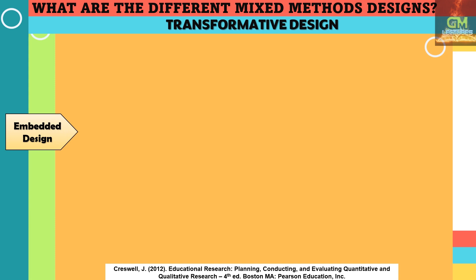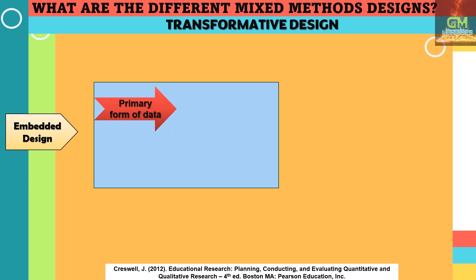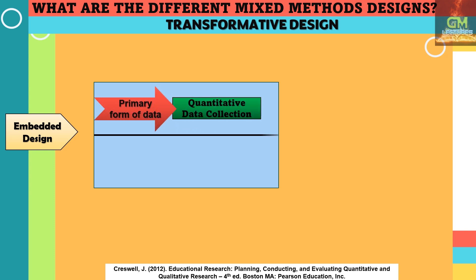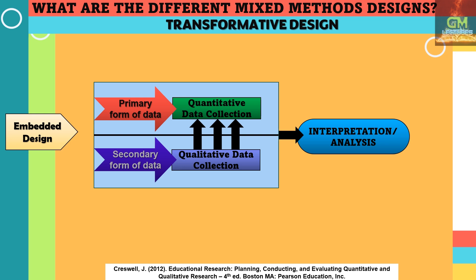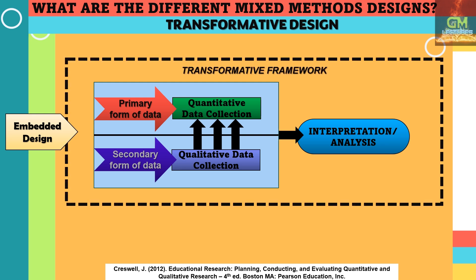For the embedded design within a transformative framework, we would first have the primary form of data — quantitative data — followed by the secondary form of data, which is qualitative data, to help support or augment the information provided by the primary data and assist with interpretation and analysis of the results. Since this is a transformative design, this sequence is conducted within a particular transformative framework.